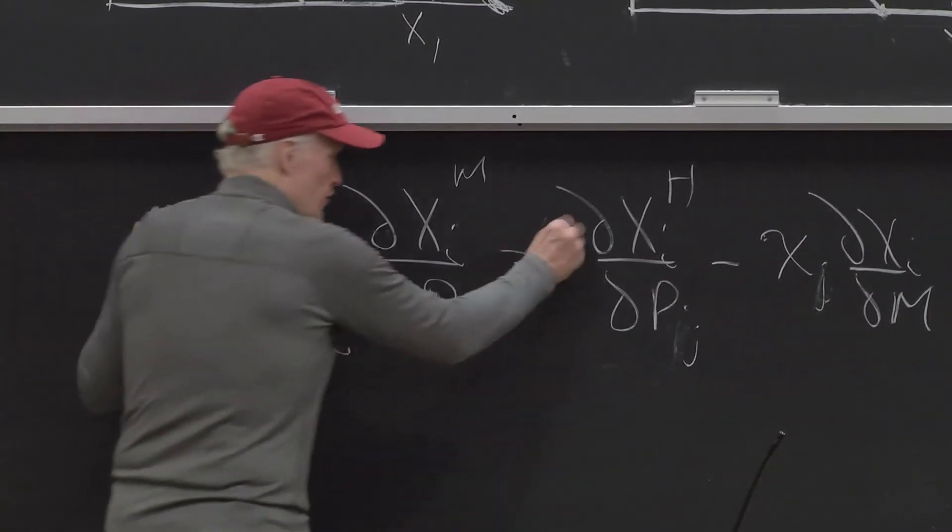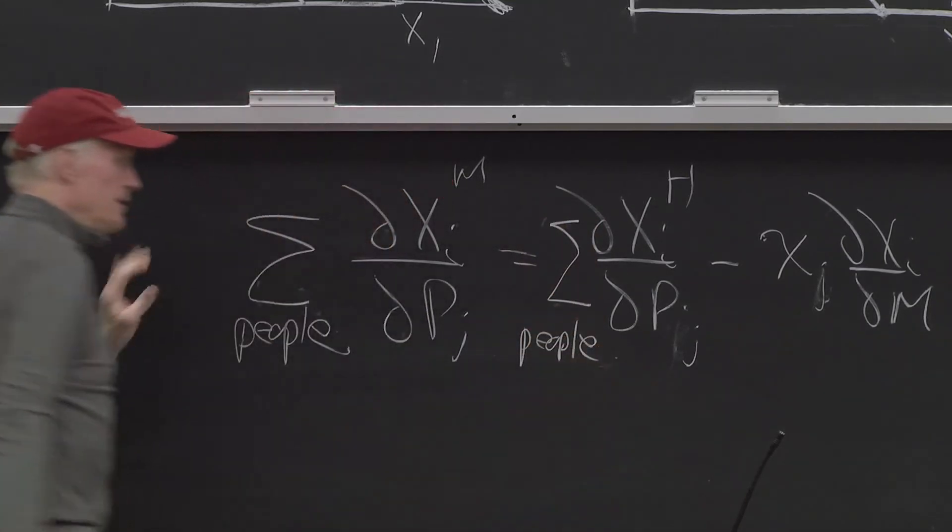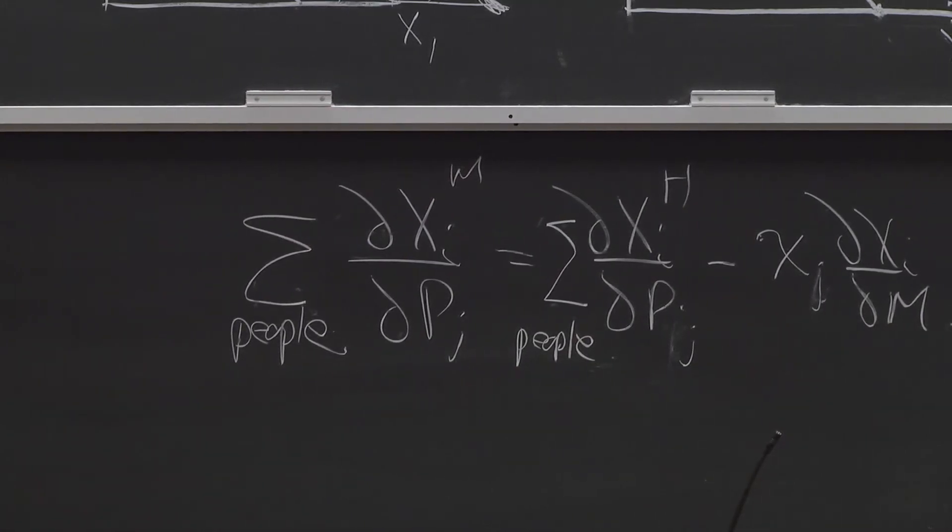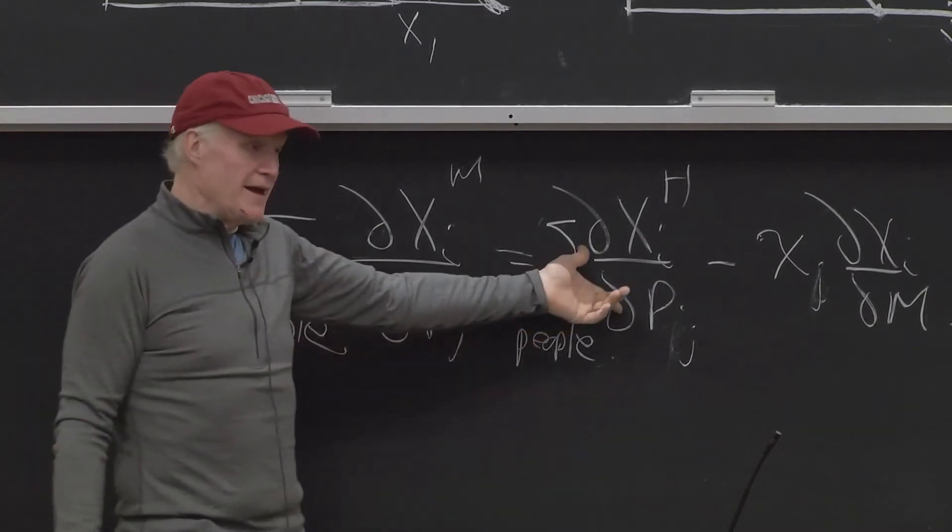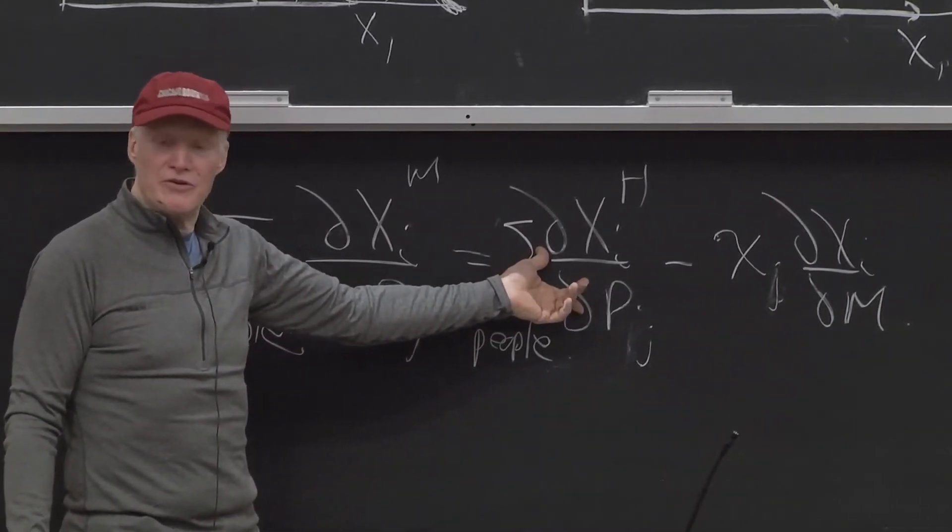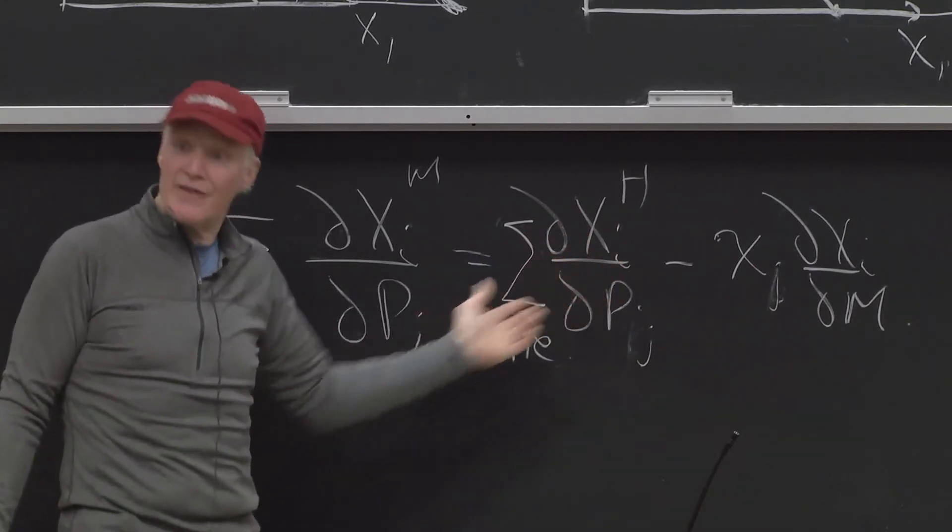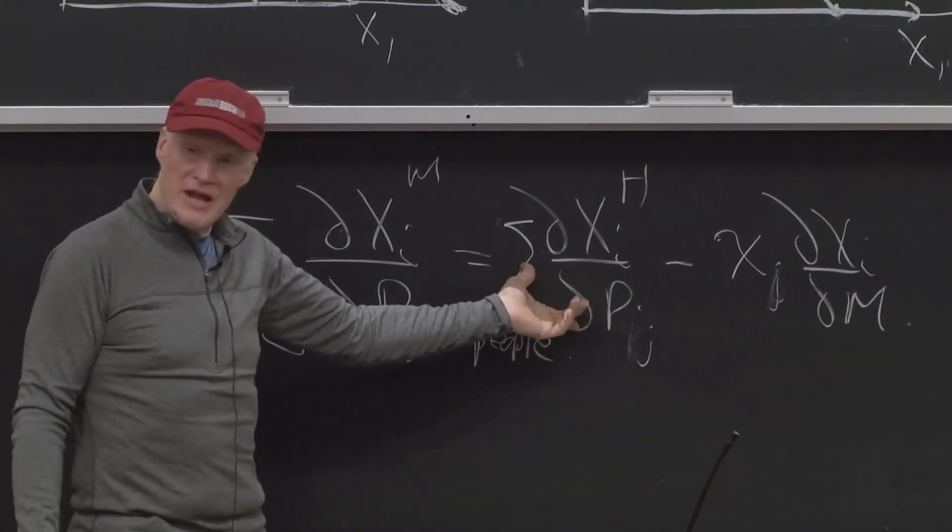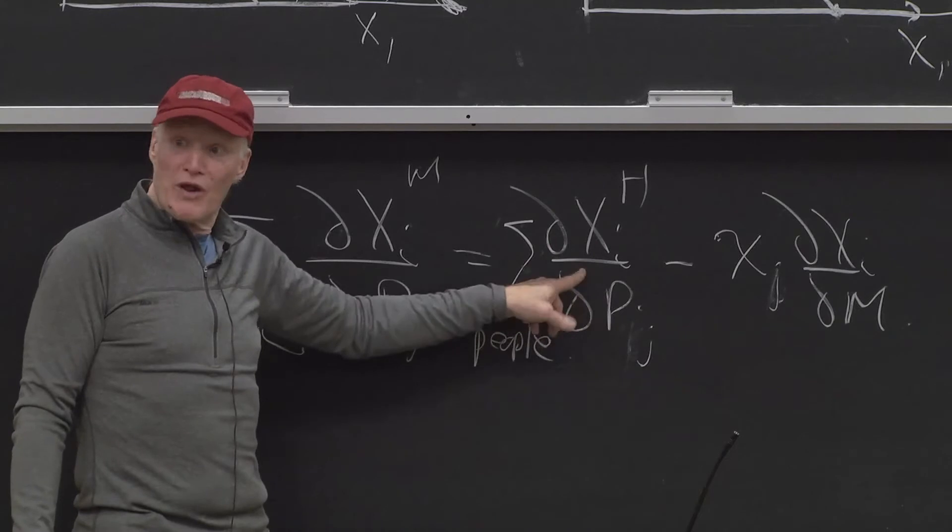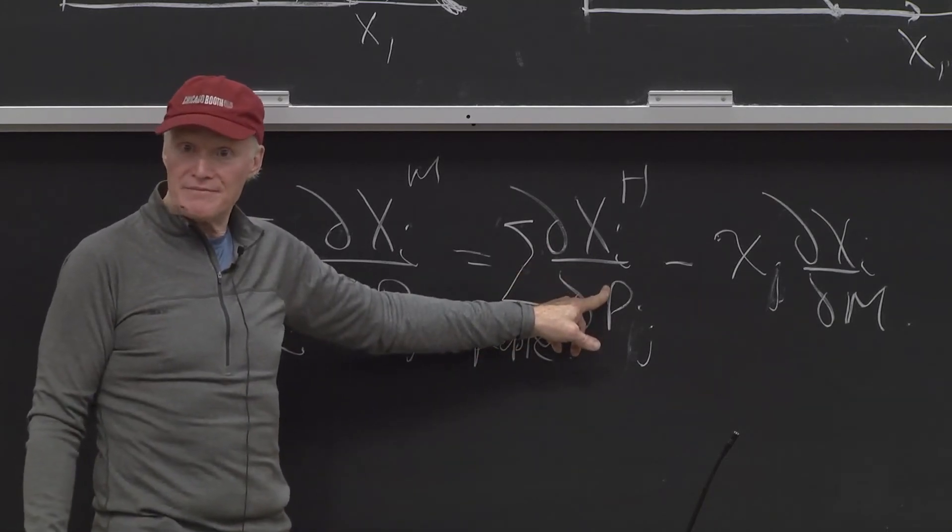What is this term? Well, that's just the aggregate Hicksian effect. That's how much I would reduce my consumption of good i holding my utility constant, how much you would holding your utility constant. I can add those up too. Each one of those numbers, if we were looking at an i,i, would be negative, and the total would be negative.